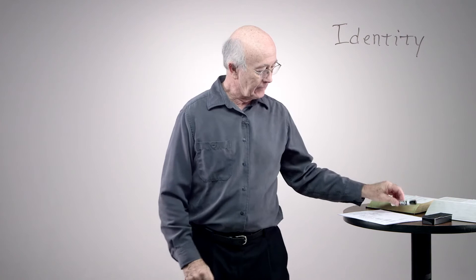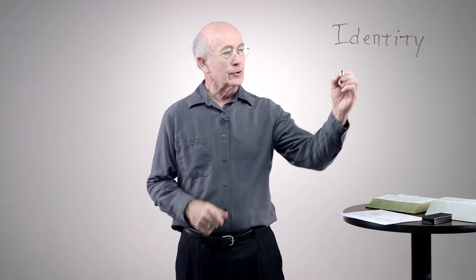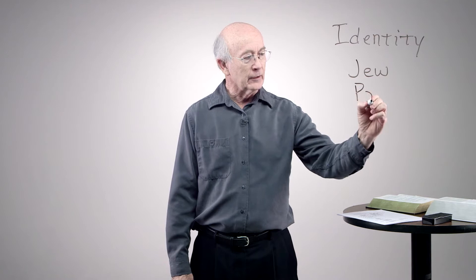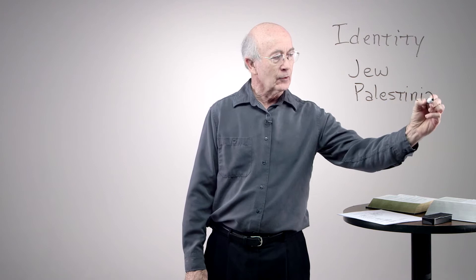We'll start with the author of the book. We will understand that the author is the man named John, but how do we get to that conclusion? Looking at the internal evidence in the Gospel of John, you know that the author is, first of all, a Jew. He understands Jewish words and Jewish customs. We know that the man is not just a Jew from anywhere in the ancient world, but he is a Palestinian Jew who knows the local territory and speaks as one who grew up in the area.